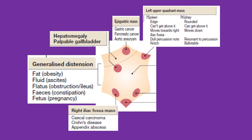In the left subcostal region, a mass could be due to the spleen or the kidney. For the spleen: it has a sharp edge, you cannot get above it (cannot palpate the space between the rib cage and the mass), it lines down to the iliac fossa, there is dullness to percussion on the lower rib cage on the left side, and there is a notch on the edge of the mass.